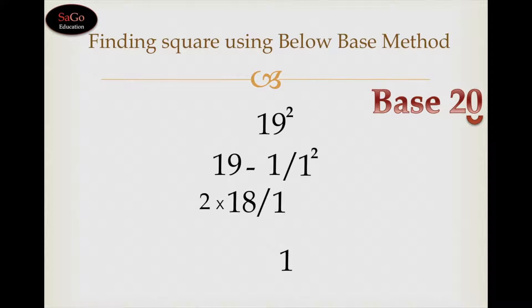And 18 would be multiplied by 2 because we have considered the base 20. So 18 multiplied by 2 is 36. Write down 36. 19 squared is 361.